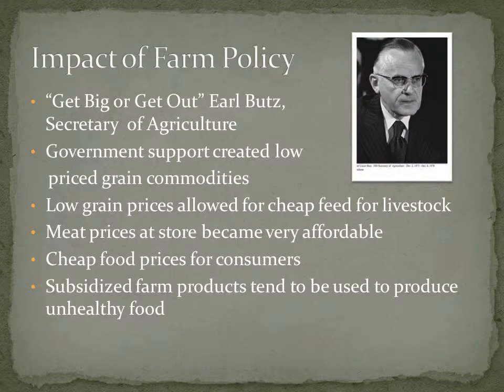Farm policy really became important in the 60s and 70s. Probably one of the most famous quotes by a secretary of agriculture was from Earl Butz, whose comment was simply 'get big or get out.' He was telling farmers they needed to increase farm size. The government was going to support low-priced grain commodities, so the more you could produce, you were guaranteed a profit. This produced cheap feed for livestock, which lowered the price of meat and made cheap food for consumers.